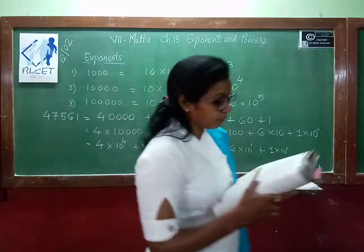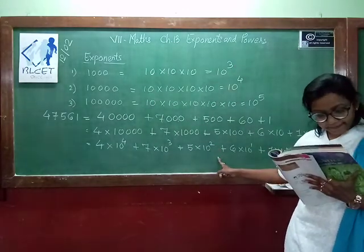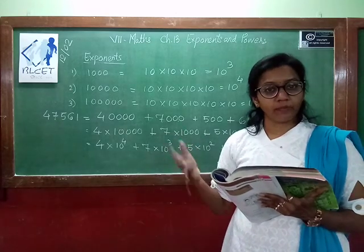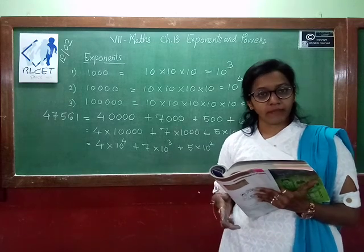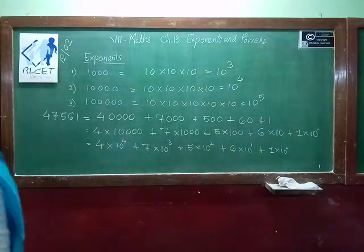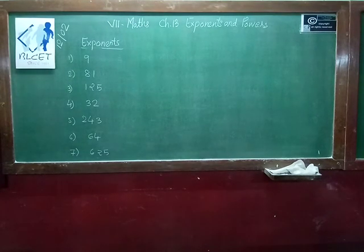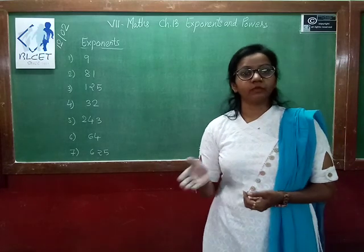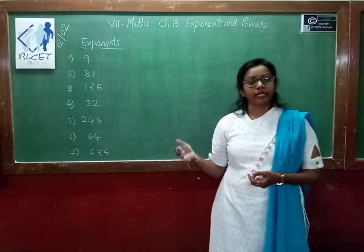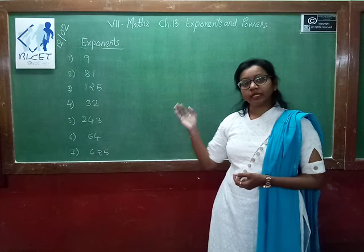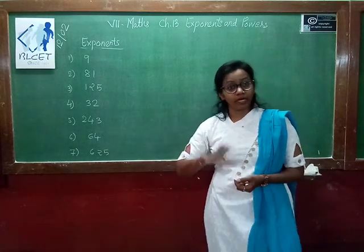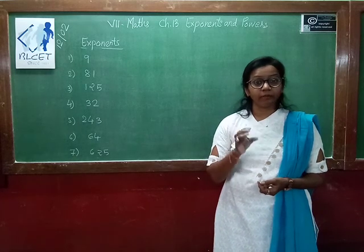Some more numbers are given to you — those can also be written in exponent form, which we will see in exercise questions. Now, except numbers like 10, 100, 1000, 10,000, suppose we have some other numbers. Then how can we represent them in terms of powers and exponents? To represent any number in exponent form, you need to check whether its factors can be expressed as repeated multiplication of the same number.